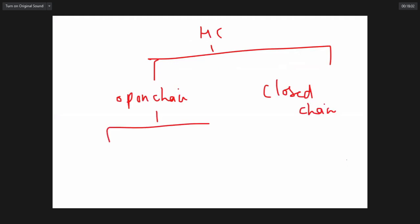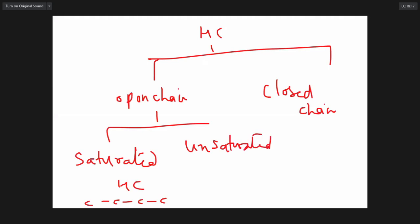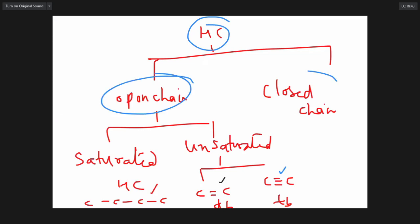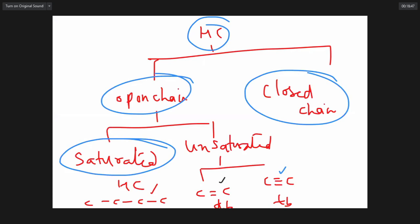Open chain compounds are saturated means all carbons are making only single bonds — these are called alkanes. If they have double bonds, they are called alkenes. If they have triple bonds, they are called alkynes. Alkanes are also called paraffins because they are unreactive. They have a formula CₙH₂ₙ₊₂. For example, N=5 means 12 hydrogens, N=10 means 22 hydrogens. Their feature is that they have only sigma bonds, only single bonds between atoms.